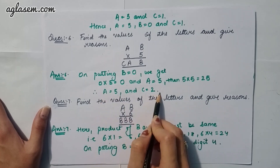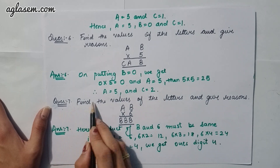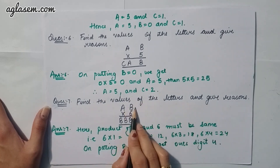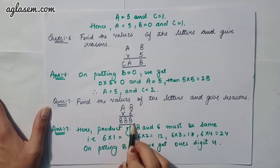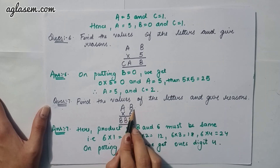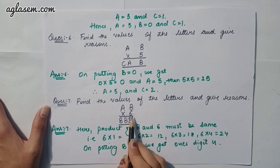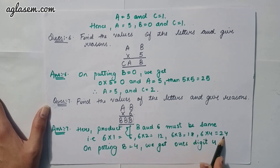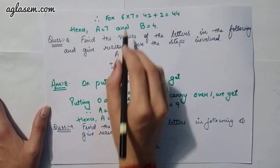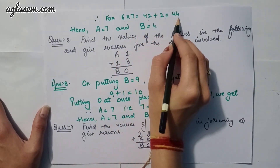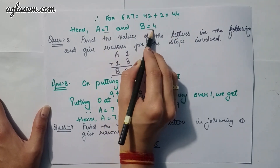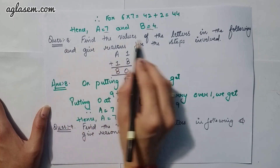Moving to the seventh question: AB × 6 = BBB. The product of B and 6 must end in B. Trying B = 4: 6 × 4 = 24, ones digit is 4. Then 6 × 7 = 42, plus carry 2 = 44, giving BBB = 444. Therefore A = 7 and B = 4.